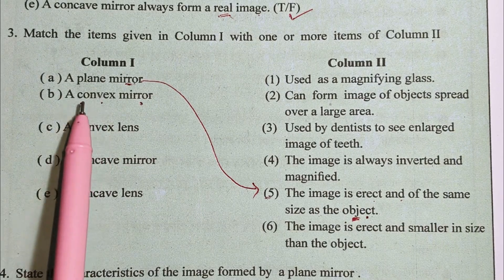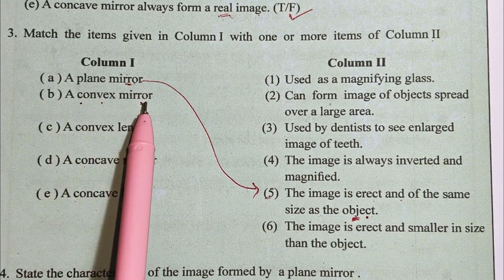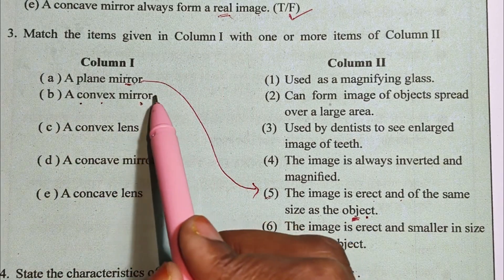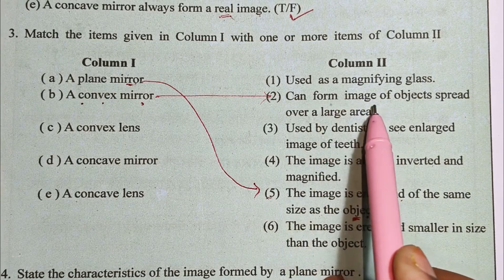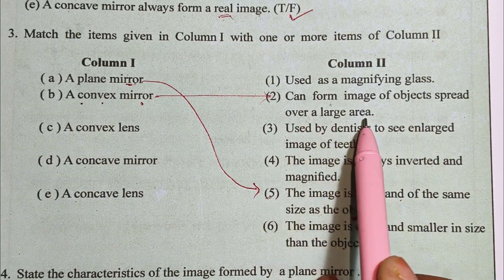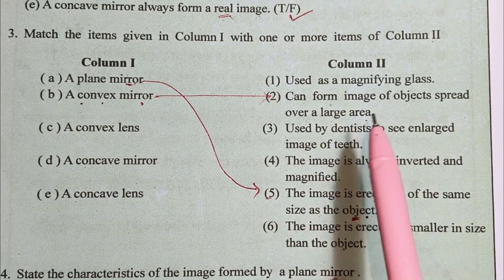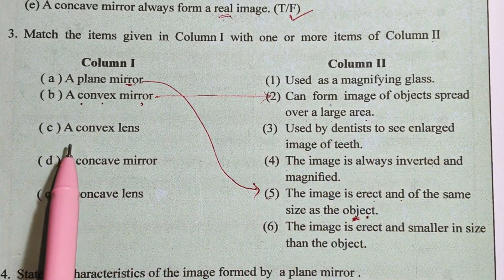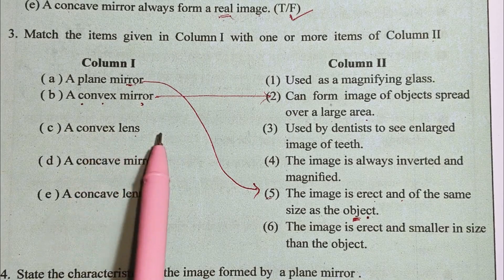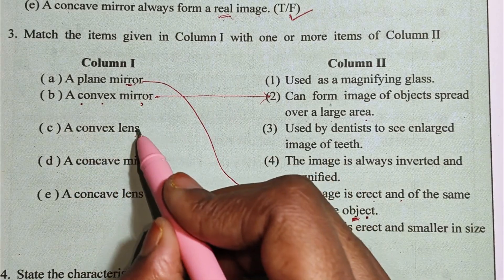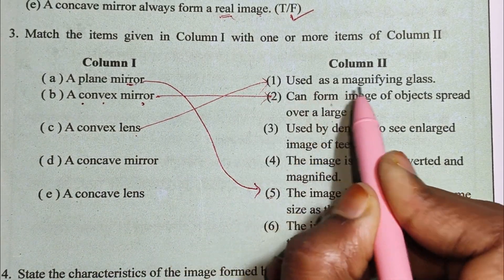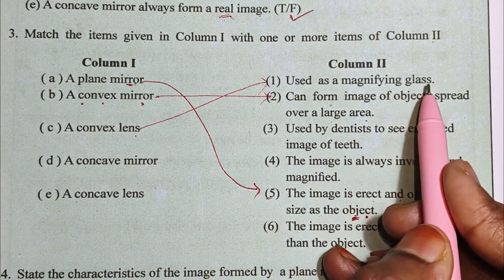Number B: This is a convex mirror, which can form an image of objects spread over a large area. Number C: This is a convex lens, which is a large lens.